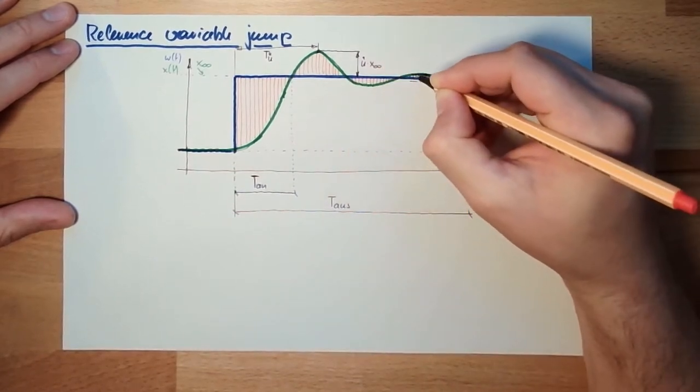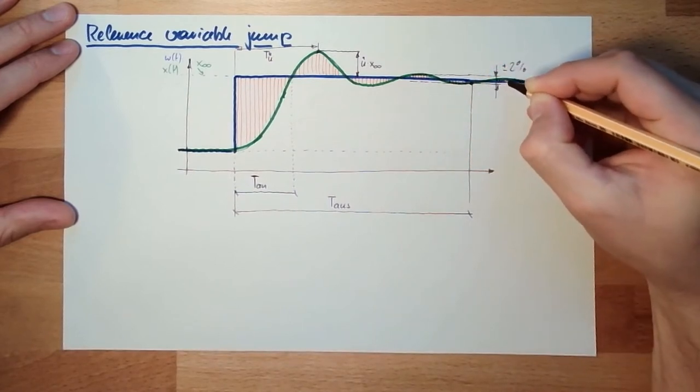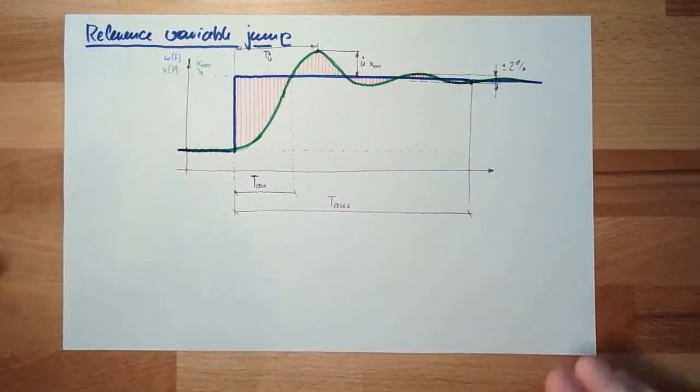And we could say, the bigger the error is, the more this control sucks. The smaller the error is, the better the control is.